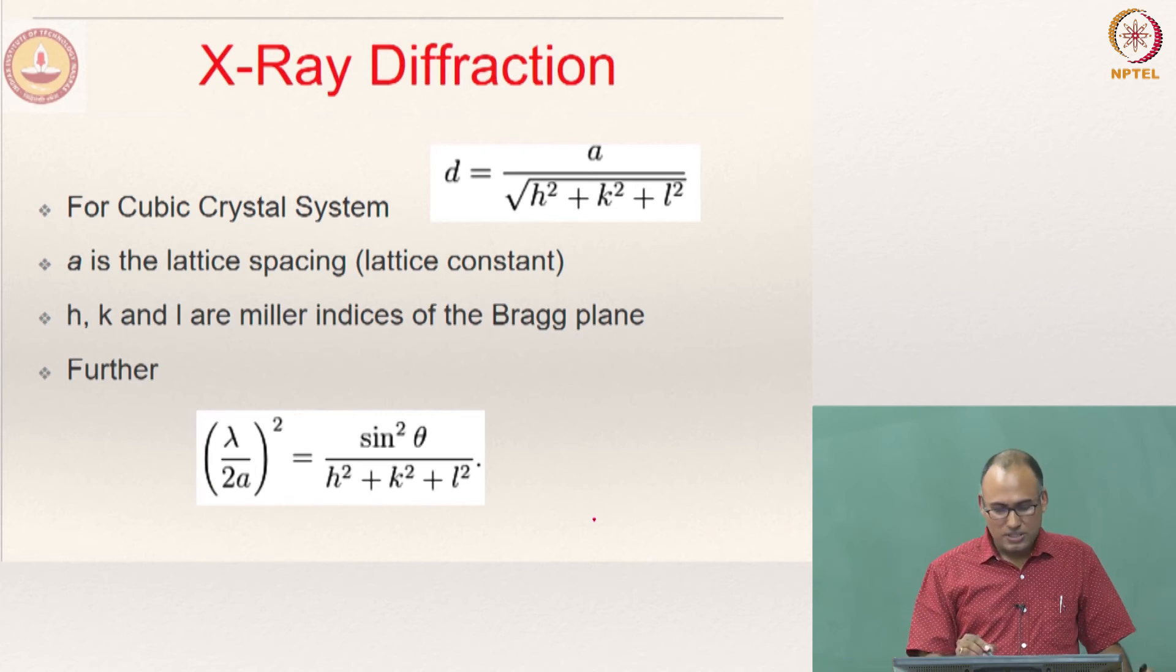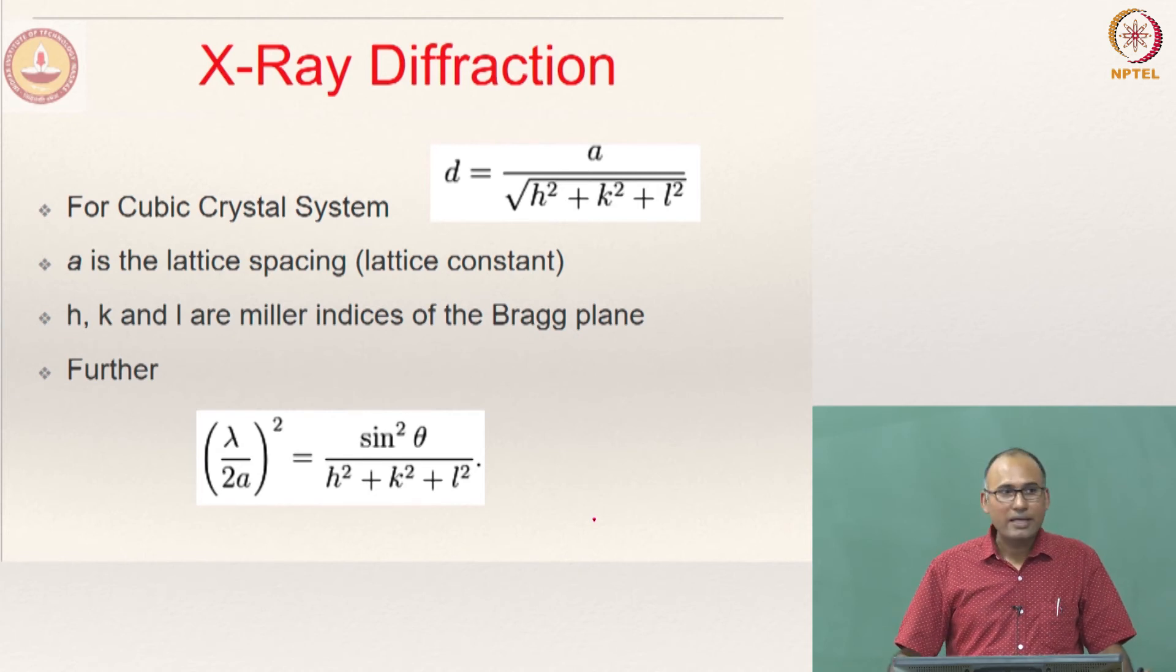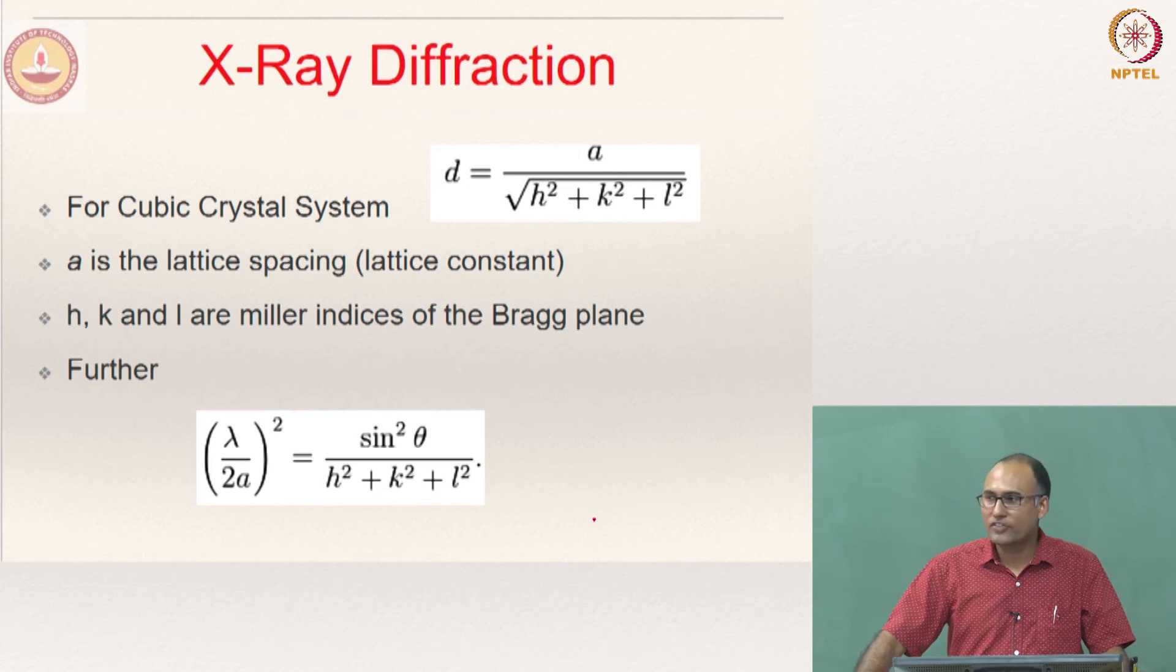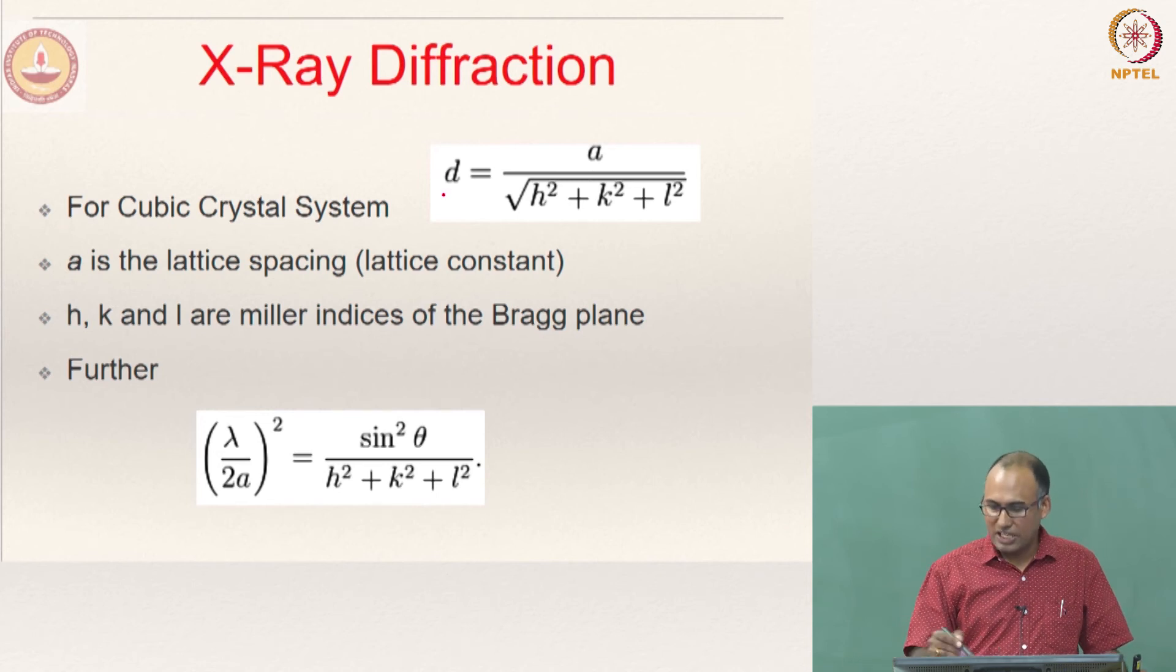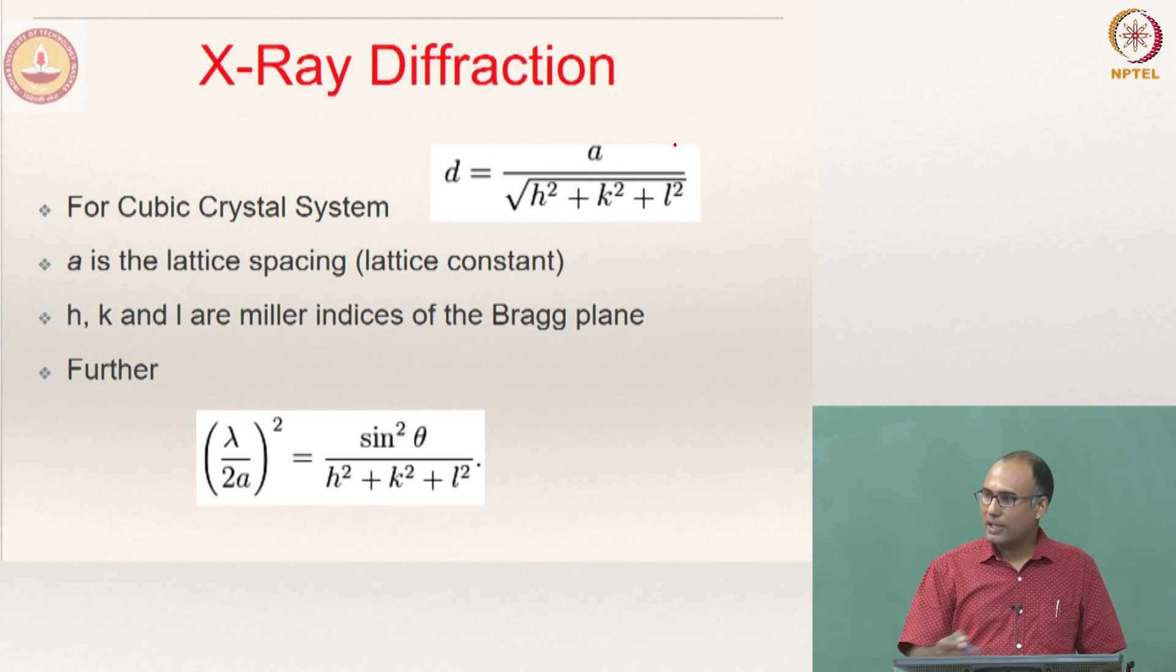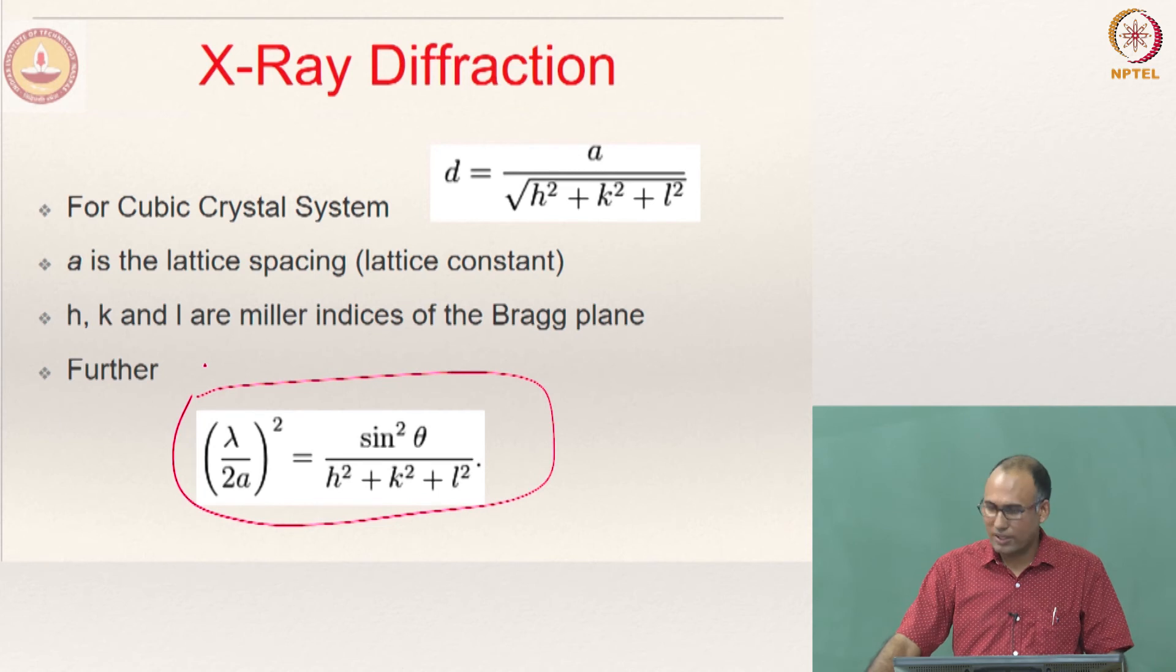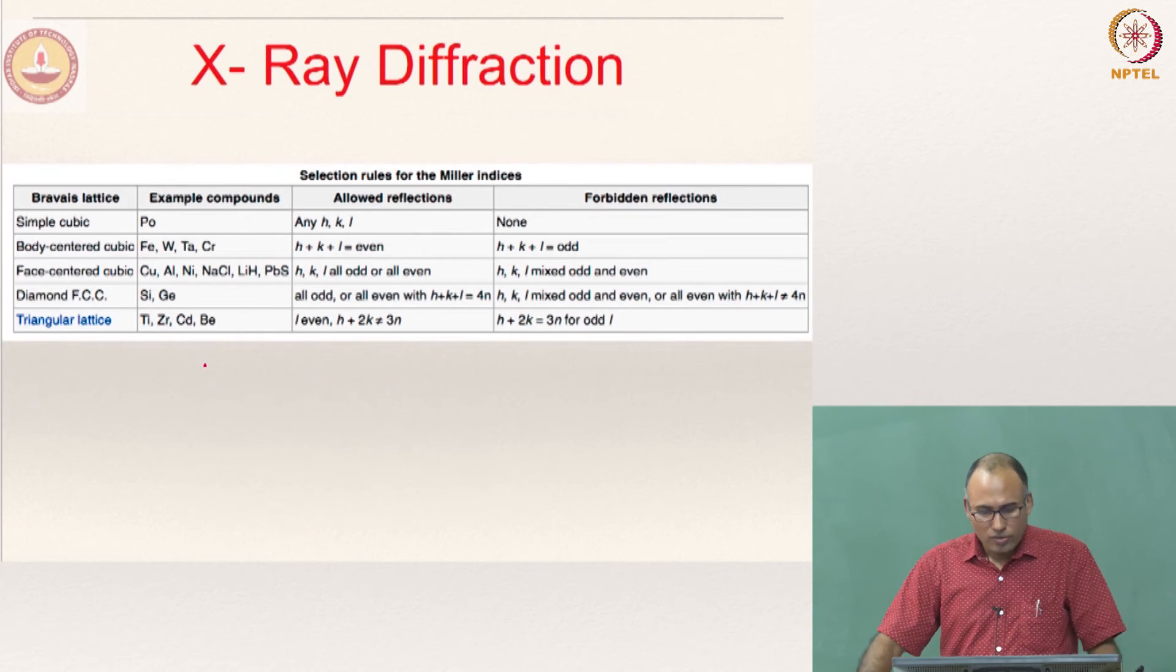Now, you can use the formula that we have derived before. N lambda is equal to 2 d hkl sin theta, where hkl is the Miller indices of the crystallographic plane. And for a cubic crystal system, you know that d equal to a by square root of h squared plus k squared plus l squared. And then you substitute that in the previous formula and then you can actually derive this relation lambda by 2a whole square. A will be what? Lattice parameter.